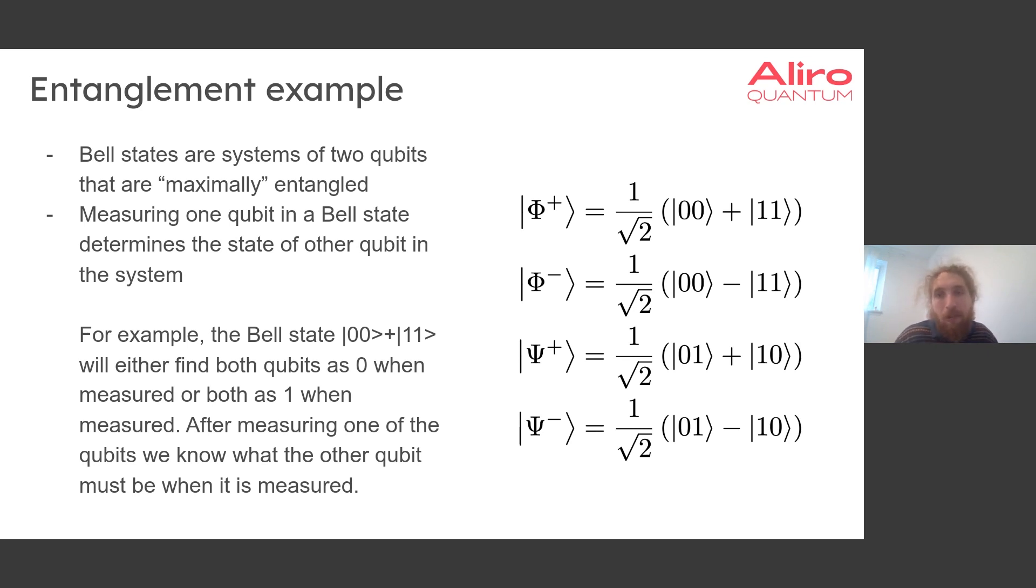The canonical example of entangled states is that of the Bell states. They are four maximally entangled two qubit states. Before measuring either qubit in a Bell state, both qubits can be found to be 0 or 1. However, measuring one of the qubits will completely determine the state of the other qubit.